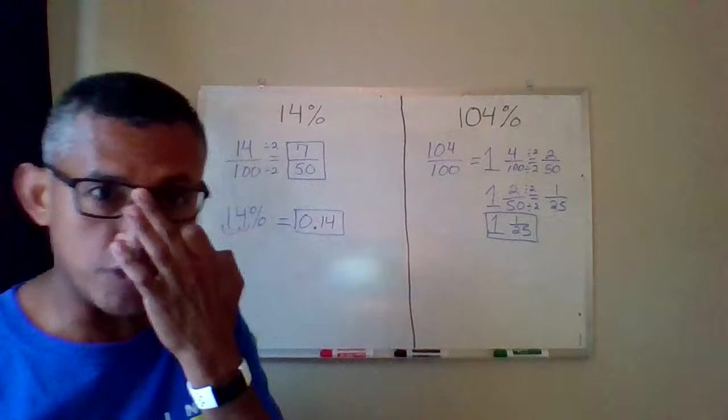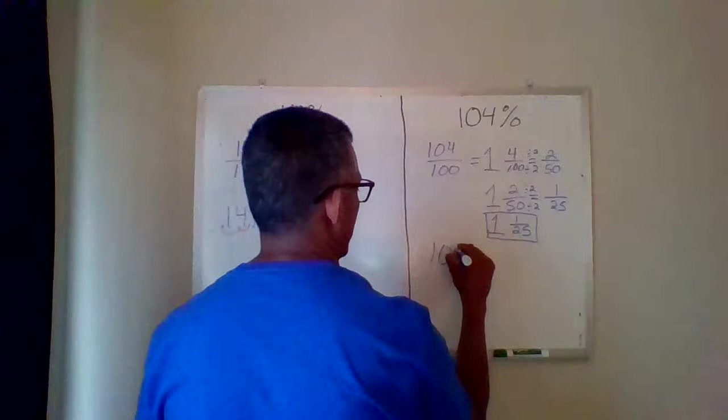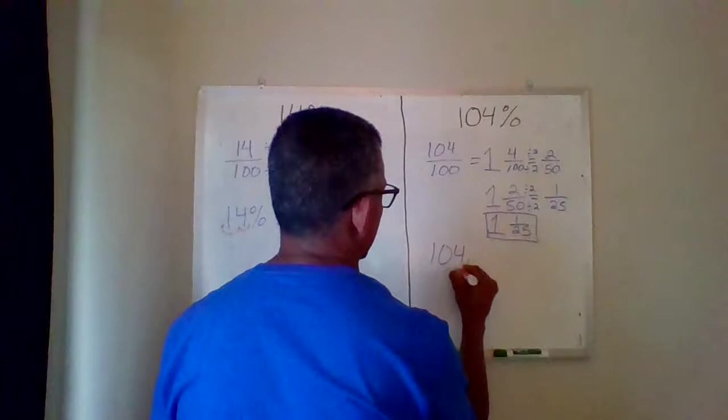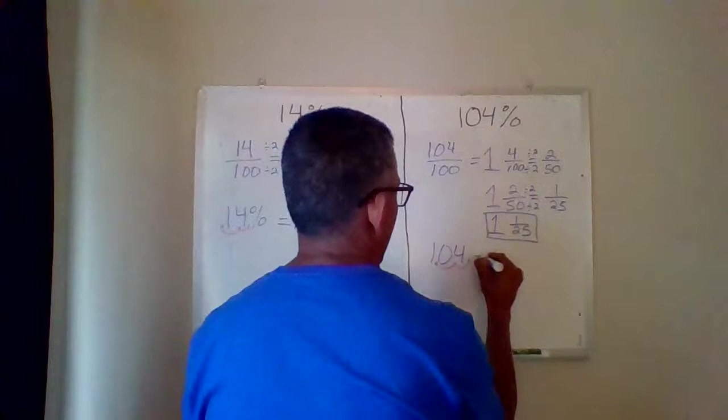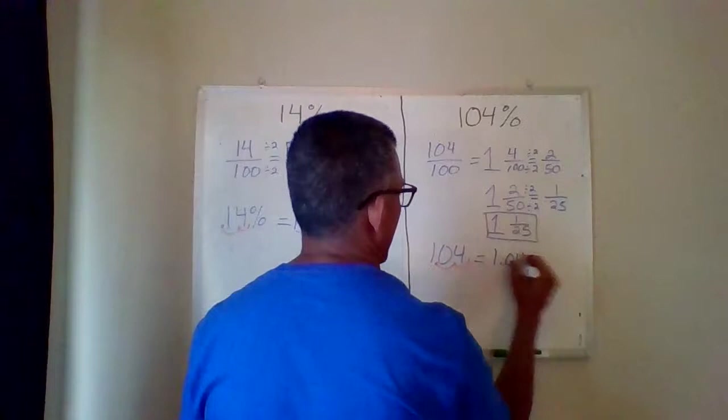So sometimes you'll have to simplify more than once because the point is you've got to get it to its simplest form. If I want to change that into a decimal, again, I take that imaginary decimal and I move it two places to the left, which is the same as dividing by 100. And so 104% as a decimal is one and four hundredths.